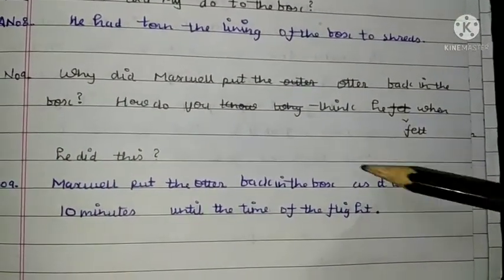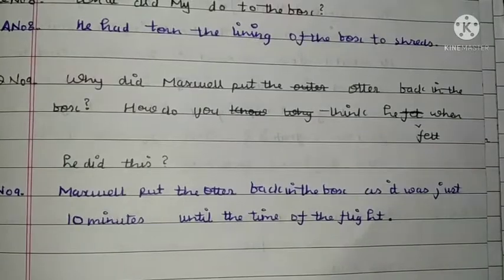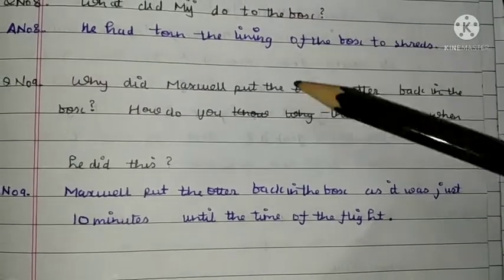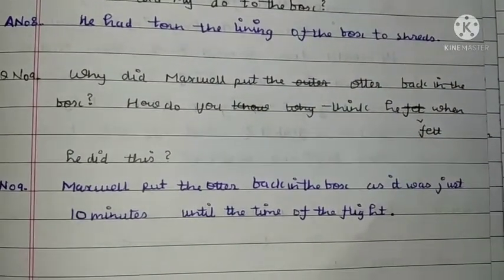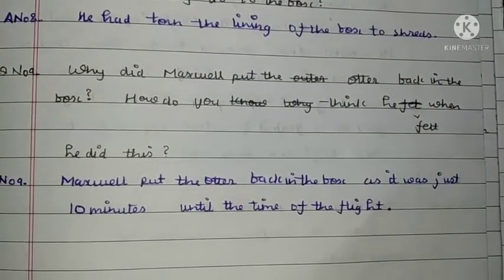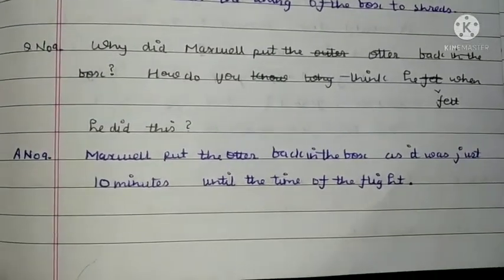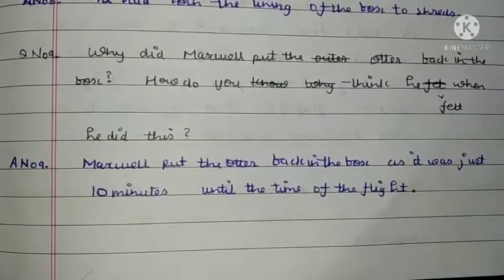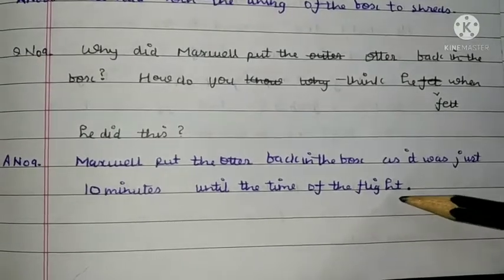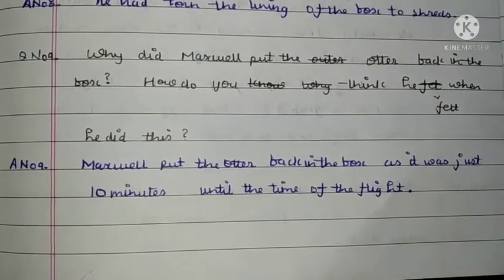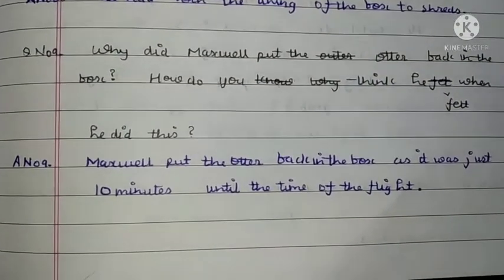Question number 9: Why did Maxwell put the otter back in the box? Maxwell put the otter back in the box as it was just 10 minutes until the time of his flight. How do you think he felt when he did this?